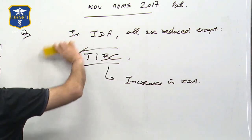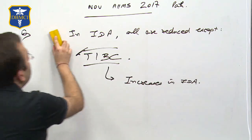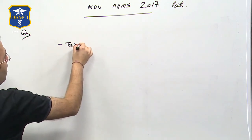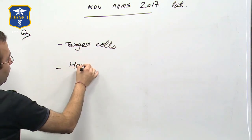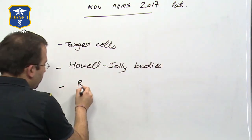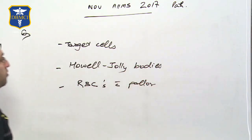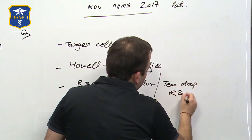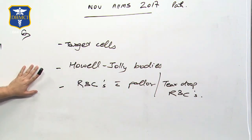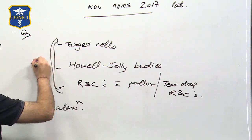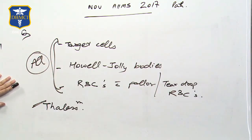The next question showed three microscopic images: the first showing target cells, the second showing Howell-Jolly bodies, and the third showing RBCs with pallor or teardrop RBCs. The question asked which features are seen in thalassemia, and the answer was all of the above — thalassemia is associated with target cells, Howell-Jolly bodies, and teardrop RBCs with central pallor.